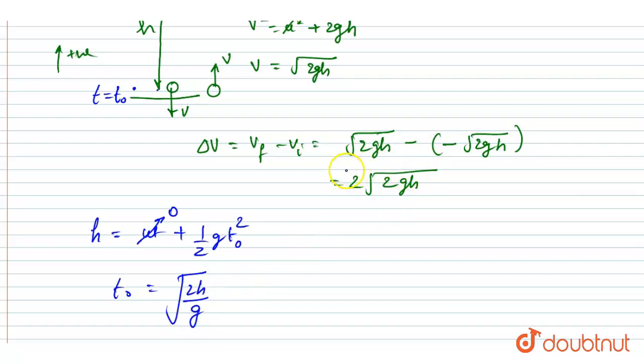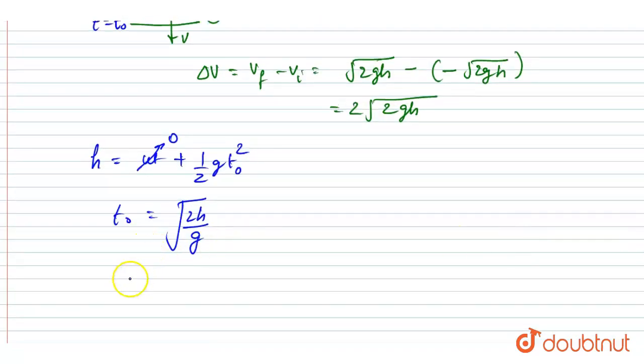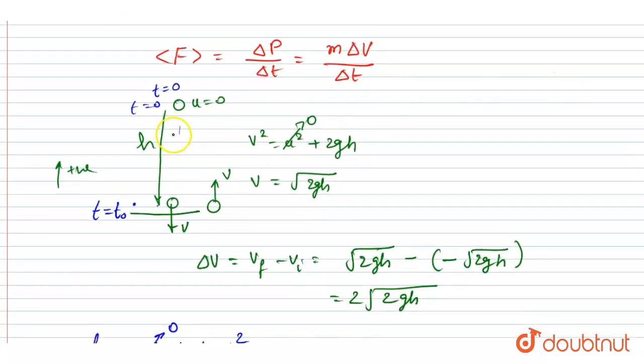So to change this much velocity it takes 2t₀ time. So the Δt I will write is 2t₀.